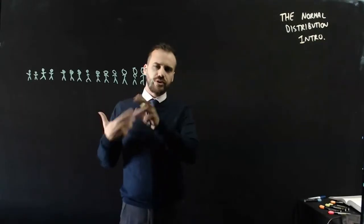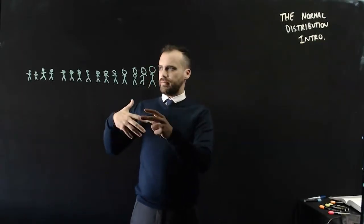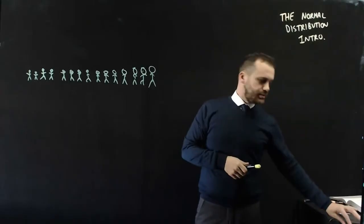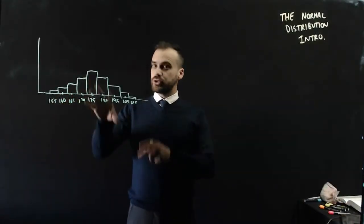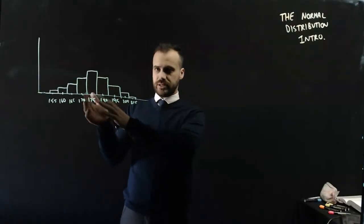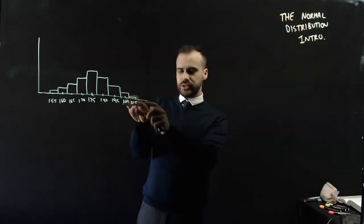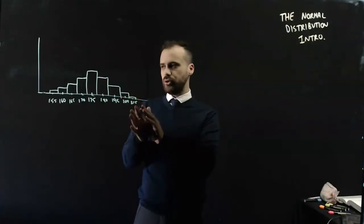If we were to draw this with a histogram, it would look a little more like this. So, you'd have one or two short people, and as we move up, the most commonly occurring height is somewhere in the middle, and then you have just a couple of really tall people.